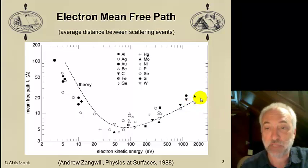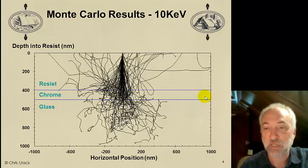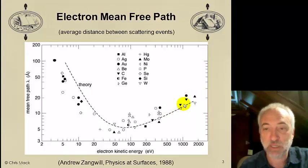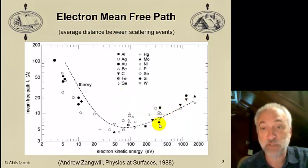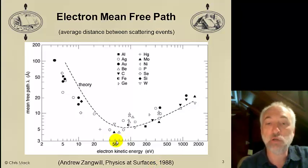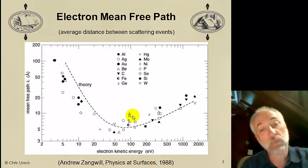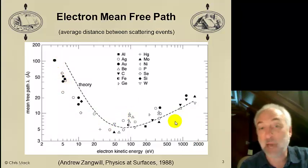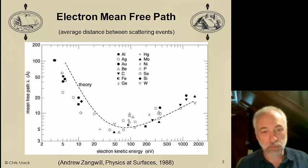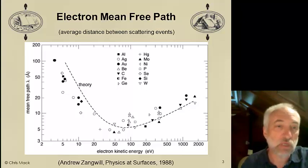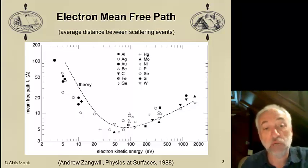We see that high energy electrons tend to travel a fair distance between scattering events. For example, a 1 keV electron is traveling one or two nanometers between events. There's a range for any electron energy, depending on the atomic number. When the electron energy gets low — below about 50 eV — the probability of a scattering event goes down, and these electrons start moving around without much scattering.